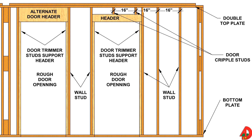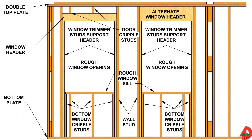A header is placed on top of a rough opening and is supported by trimmer studs that fit between the bottom plate and the bottom of the header. The rough opening for a typical window includes the same members as for the door, plus a rough sill and bottom cripple studs. A rough window sill is installed at the bottom of a rough window opening. Cripple studs are nailed between the sill and bottom plate and spaced 16 inches on center like the rest of the wall.